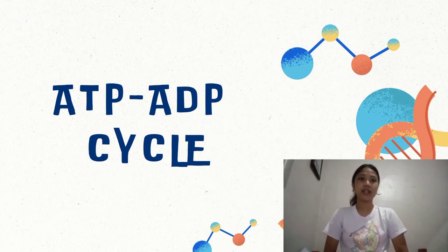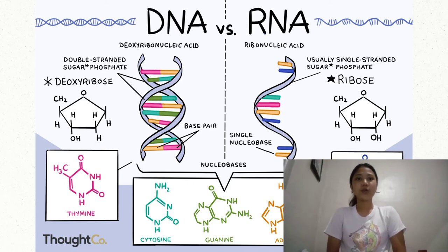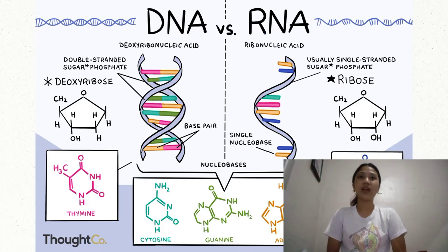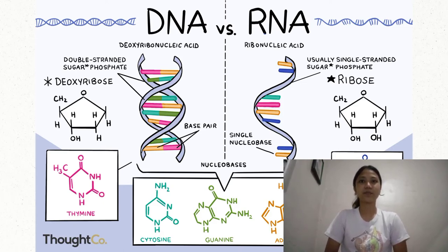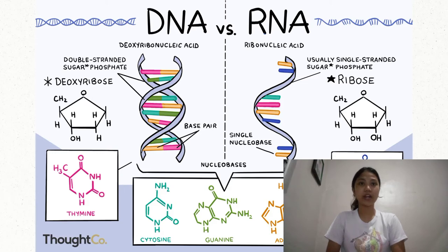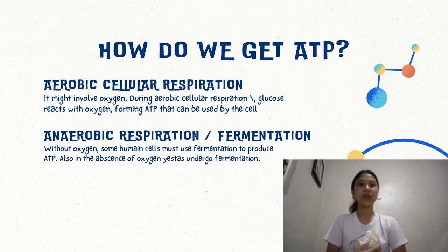Now let us proceed to the ATP and ADP cycle. But first, let us talk about DNA versus RNA. DNA is deoxyribonucleic acid while RNA is ribonucleic acid. The DNA consists of double-stranded sugar phosphate while RNA consists of usually single-stranded sugar phosphate. DNA has base pairs while RNA is single-nucleobase.